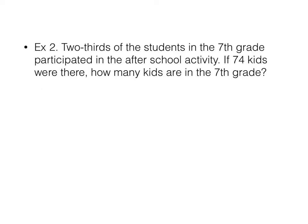Two thirds of the students in the seventh grade participated in the after school activity. If 74 kids were there, how many kids are in the seventh grade? So what's our unknown? Well, our unknown is the number of kids in the seventh grade. Two thirds of the students in the seventh grade. Of is times. So two thirds of is two thirds times N equals 74.